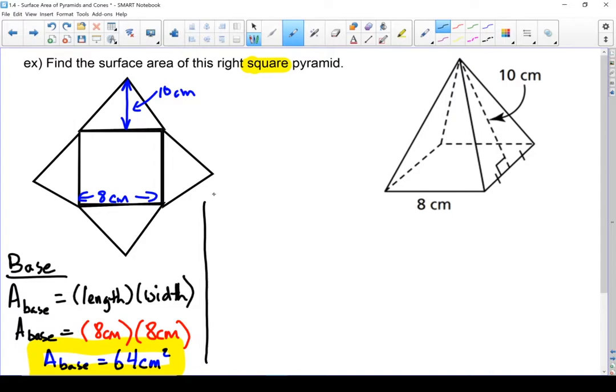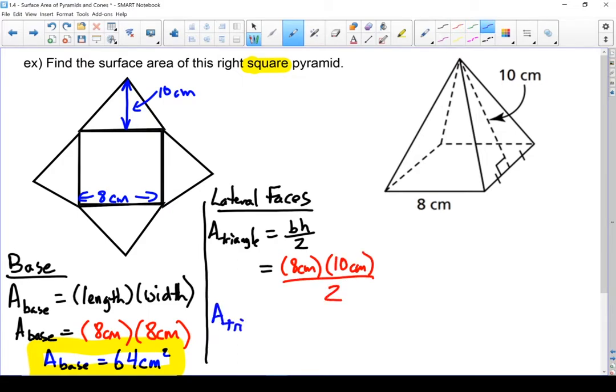Let's do our lateral faces. Area of a triangle equals base times height divided by 2. I'm putting in what I know. Base is 8 centimeters. Height is 10 centimeters. We'll divide that by 2. 8 times 10 is 80 divided by 2 gives me 40 centimeters squared. I'll put a box around that because I'm also coming back to that piece.